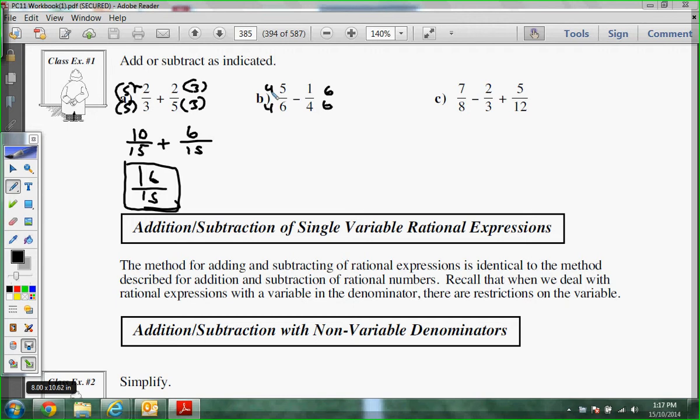So this one here would be, my common denominator is 24 for both of them. My first one is 20 over 24. My second one is 6 over 24. And with 20 minus 6, 14 over 24. We can reduce. I'd like you to reduce if you can, and that would be 7 twelfths.